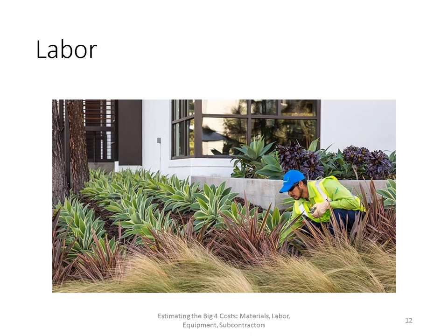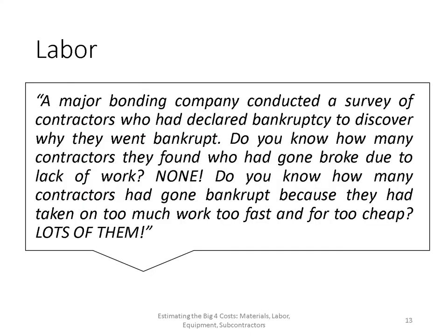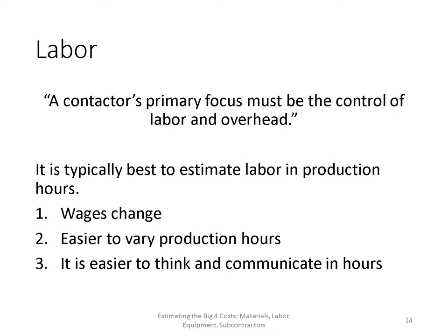Now let's look at labor. One of the best estimating textbooks I use includes a key finding: a major bonding company surveyed contractors who had declared bankruptcy. Not a single one went broke due to lack of work. But many went bankrupt because they took on too much work too fast and for too cheap. That same text states that a contractor's primary focus must be the control of labor and overhead.